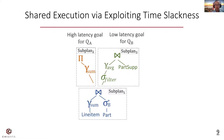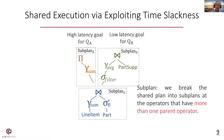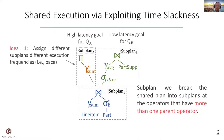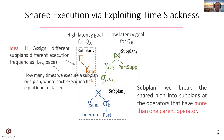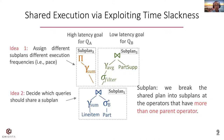The root of the two problems is that existing approaches do not consider the diverse latency goals and do not exploit the time slackness across these latency goals. To exploit the time slackness, we break the shared plan into subplans at operators that have more than one parent operator. We propose two ideas to address the above problems. The first is to assign different subplans different execution frequencies or paces. The second idea is to decide which queries should share a subplan.